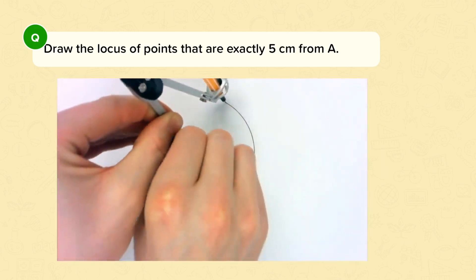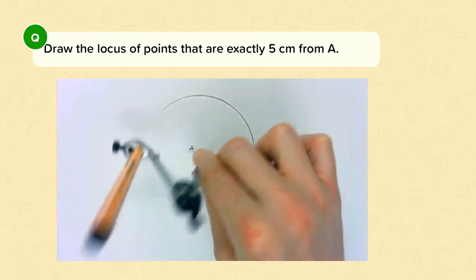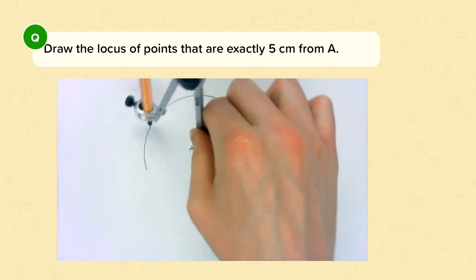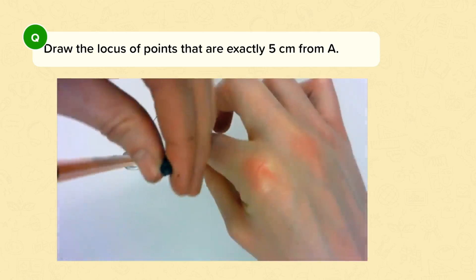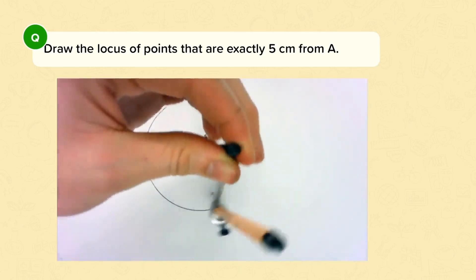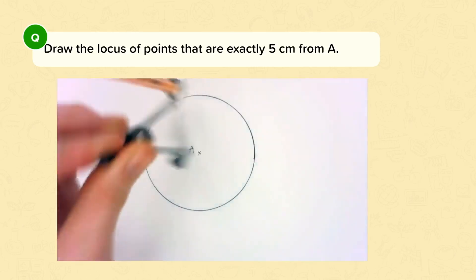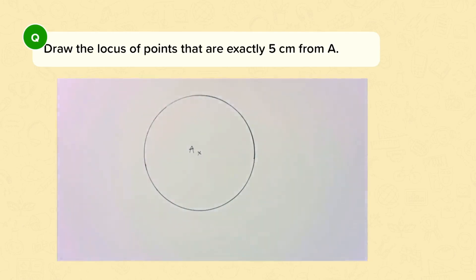It's really important here that you do not touch the pencil at any point, because you don't want to alter the distance between it and the centre of the circle. So now this circle that we've drawn is the locus of all of the points that are exactly five centimetres from A.